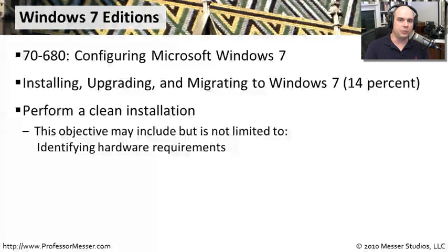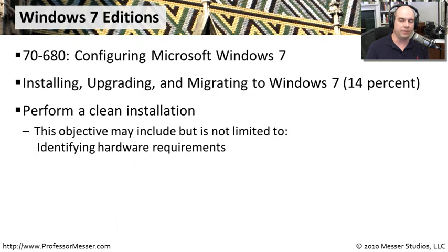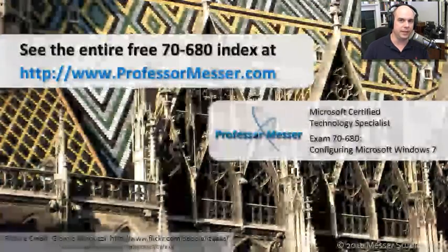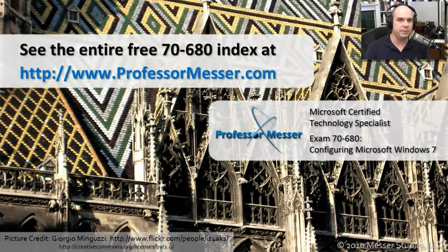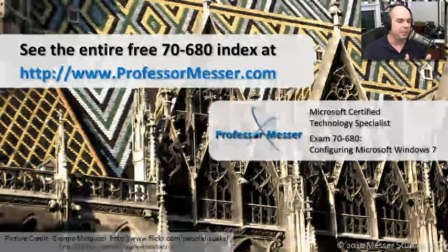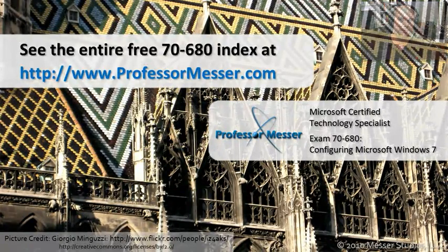That covers the topics for this video on Windows 7 editions. We went through all the different editions, understood the differences in capabilities between them, and reviewed the hardware requirements needed before installing Windows 7. There are many more 70-680 Windows 7 configuration videos available — visit our message boards or send a message on the website at ProfessorMesser.com.